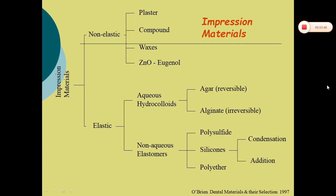A brief description of impression materials: non-elastic and elastic. In non-elastic we have plaster, compound waxes, and zinc oxide eugenol impression paste. In elastic we have aqueous hydrocolloids and non-aqueous elastomers. Aqueous hydrocolloids include agar, which is reversible, and alginate, which is irreversible. Non-aqueous elastomers include polysulphides, silicones — which are again addition and condensation silicones — and polyether.